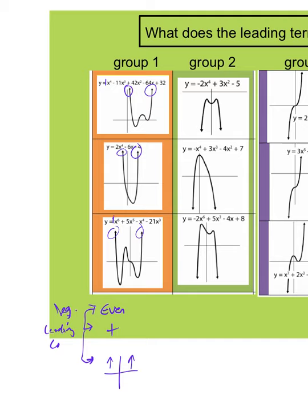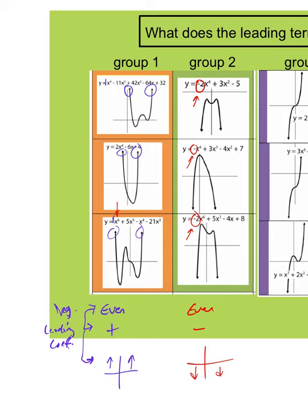In group two, we again have an even degree on all of these, but we have a negative leading coefficient — negative 2, negative 1, negative 2. That causes the end behavior to be negative. The reason is, any value we put in for x — whether it's negative 1,000 or positive 1,000 — when you have an even exponent, it's going to make that value positive. But that positive value, when multiplied by a negative leading coefficient, turns all those positives upside down and negative. So the first group had positive exponents with a positive coefficient, so it stayed positive. But when multiplied by a negative coefficient, it just kind of turns this upside down.